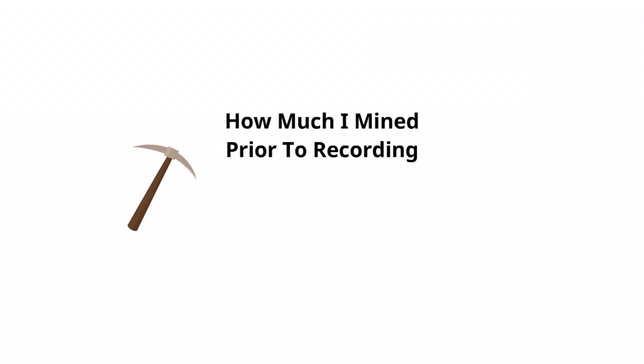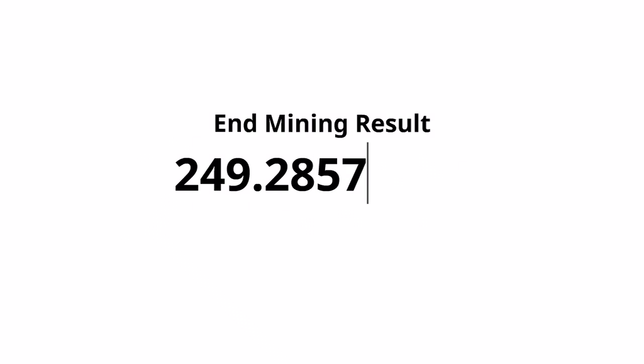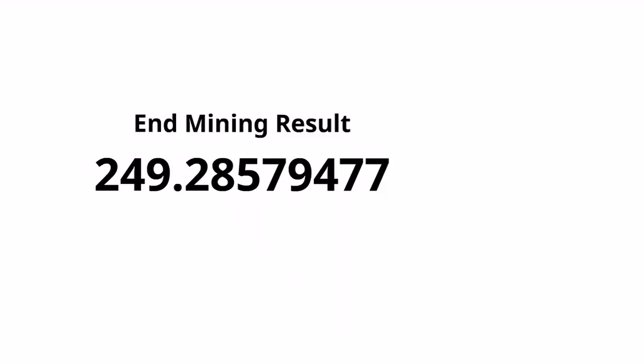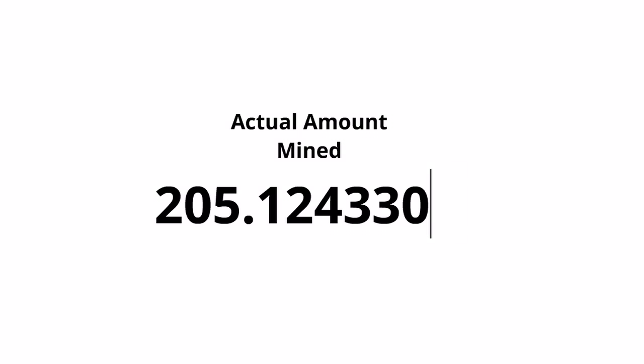Before we dive into the results, I want to remind you that I mined Bytecoin prior to the time lapse, so we need to take away 44.16146468 from the end result 249.28579477, which equals 205.12433009. This is the reason you might notice the difference between what Minergate says I have in my wallet and what we actually mined.